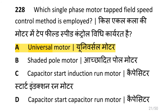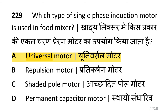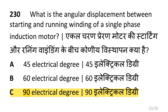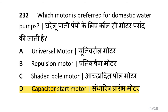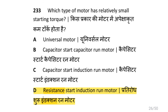Which single phase motor uses the tapped field speed control method? That is universal motor. Which type of single phase induction motor is used in food mixers? That is universal motor. What is the angular displacement between starting and running winding of a single phase induction motor? That is 90 electrical degrees. Why is the hysteresis motor suitable for sound recording instruments? That is noiseless operation. Which motor is preferred for domestic water pumps? That is capacitor start motor. Which type of motor has a relatively small starting torque? That is resistance start, induction run motor.